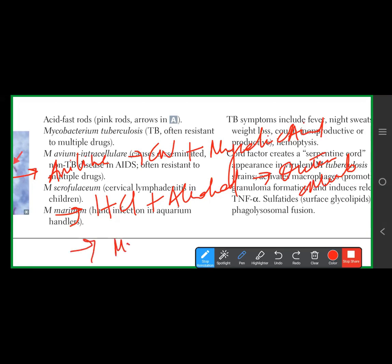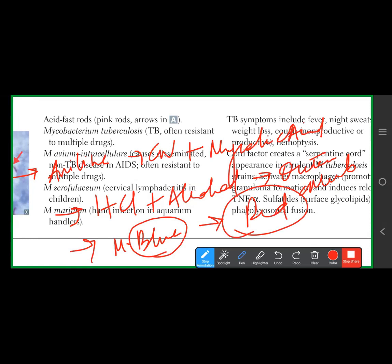Result: mycobacteria appear red (retain carbol fuchsin); non-acid fast bacteria appear blue (take up methylene blue counterstain). Isoniazid inhibits synthesis of mycolic acids — a key part of the TB drug regimen. Without mycolic acid, mycobacteria lose acid-fastness and cannot synthesize new cell wall or multiply.